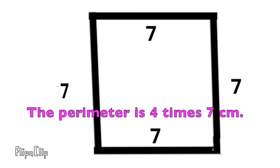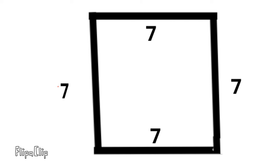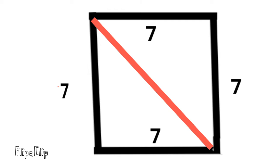The perimeter is all the lengths around the square: 7 plus 7 plus 7 plus 7, or 7 times 4, and that's 28. The perimeter is going to be 28 centimeters. It's going to be a little bit trickier guessing the length of the diagonal line. We know it's going to be longer than 7 centimeters, but how much longer?